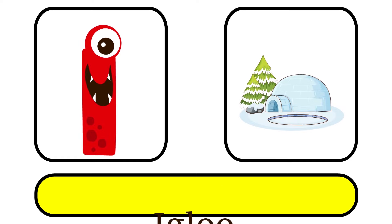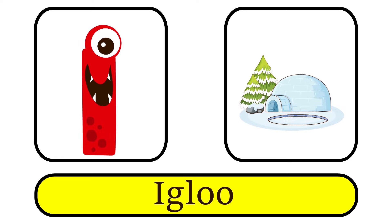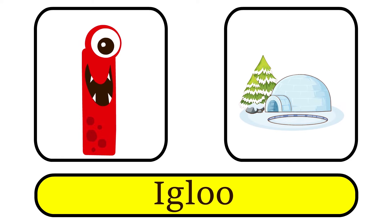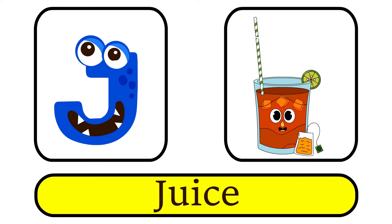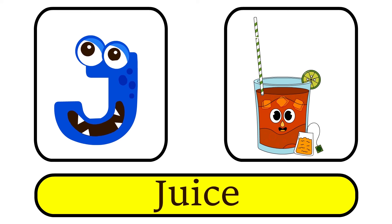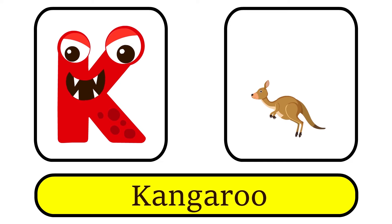I is for Igloo. E, E. J is for Juice. J, J. K is for Kangaroo. K, K.